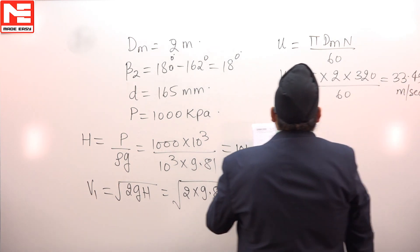V1 is now known. We have diameter and we have rpm, so we can find u. U will be pi d mean n by 60. So pi into d mean is 2, into n which is 320, by 60. The value of u will come out to be 33.49 meters per second.